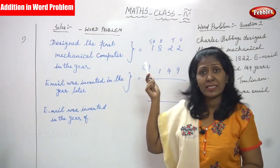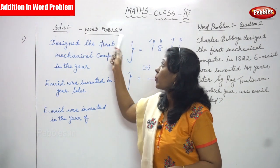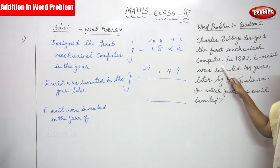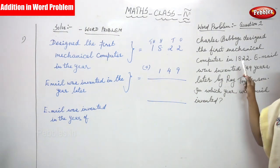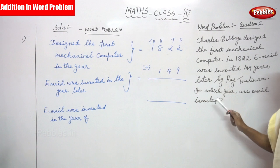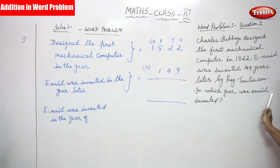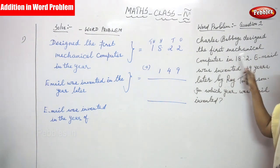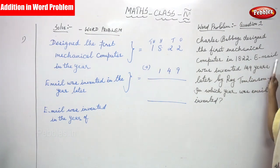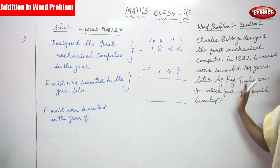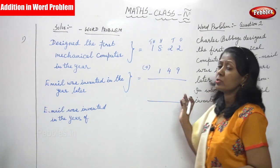Now we are going to see addition and word problems. The question is: Charles Babbage designed the first mechanical computer in 1822. Email was invented 149 years later by Ray Tomlinson. In which year was email invented? So you have to find out whether it is addition or not.